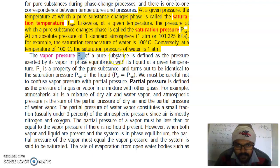The vapor pressure, PV, of a pure substance is defined as the pressure exerted by its vapor in phase equilibrium with its liquid at a given temperature. PV is a property of pure substance and turns out to be identical to the saturation pressure of the liquid.